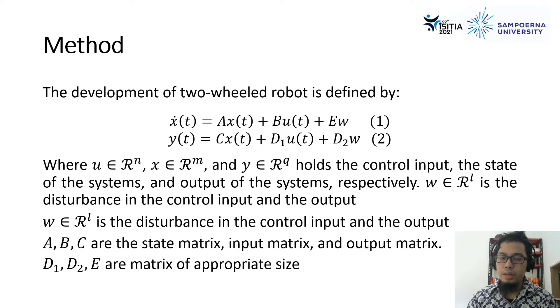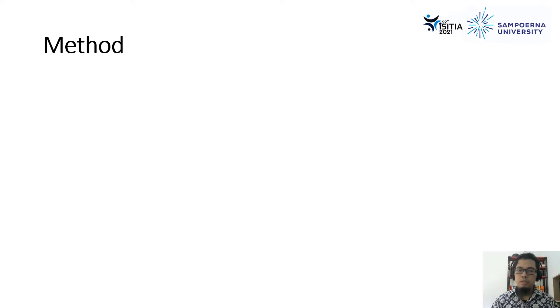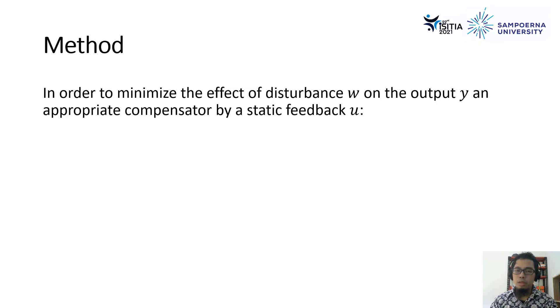D1, D2, and E are matrix of appropriate size. After we define the mathematical model of the two-wheeled mobile robot, we need to find the appropriate control input in order to minimize the disturbance of W to the desired output Y to the static feedback of U, which represents by equations three.